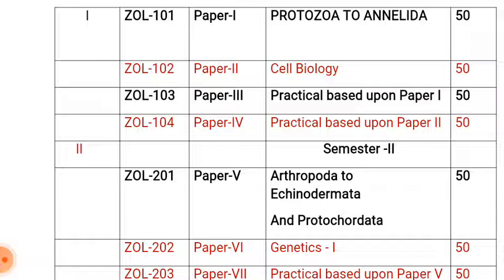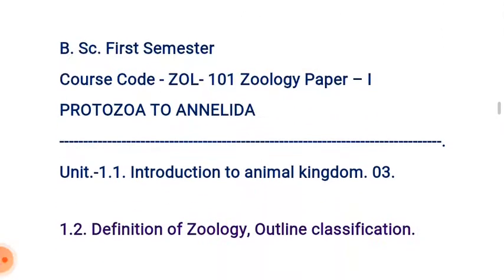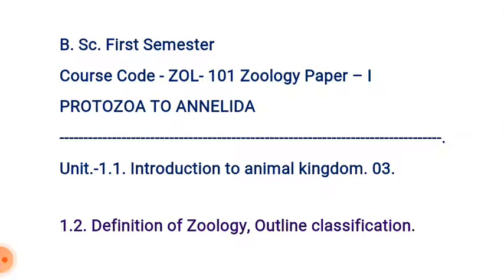Paper one is Protozoa to Annelida, which carries 15 marks. B.Sc. first year course codes are Zoology 101 to Zoology 104.